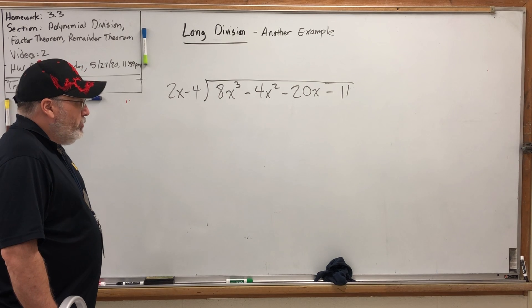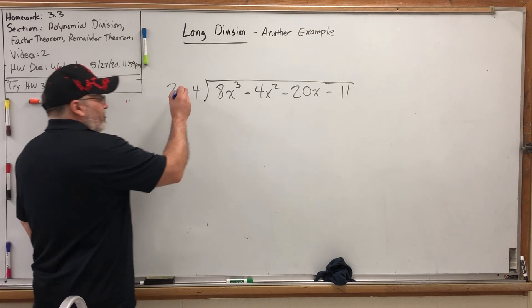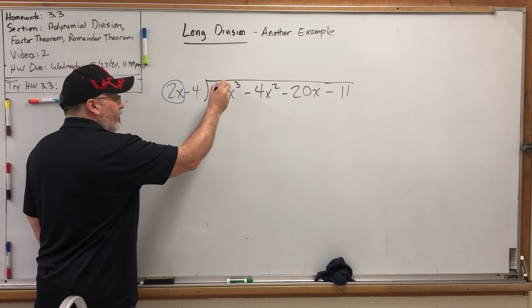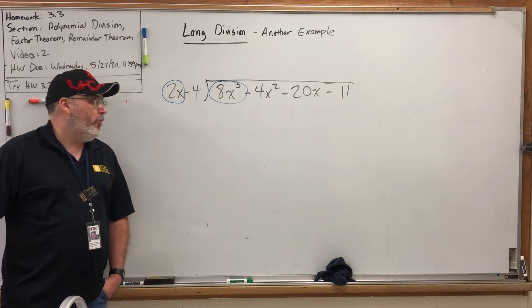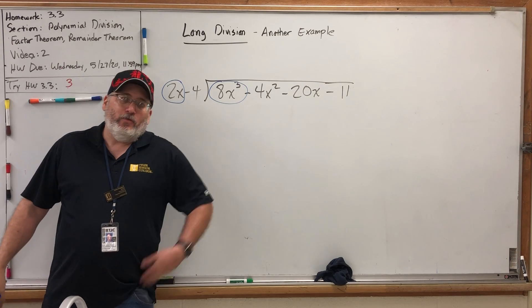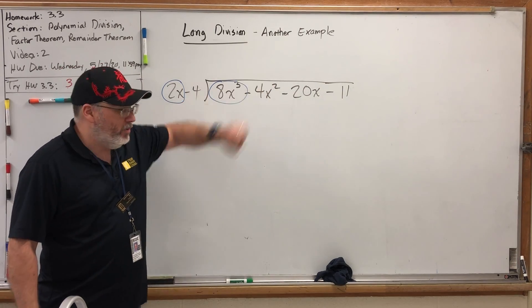So the first thing we do is ask, how many times does the leading term of the divisor go into the leading term of the dividend? So how many times does 2x go into 8x³? Now you may be able to look at it and write the results up here, and that's fine.